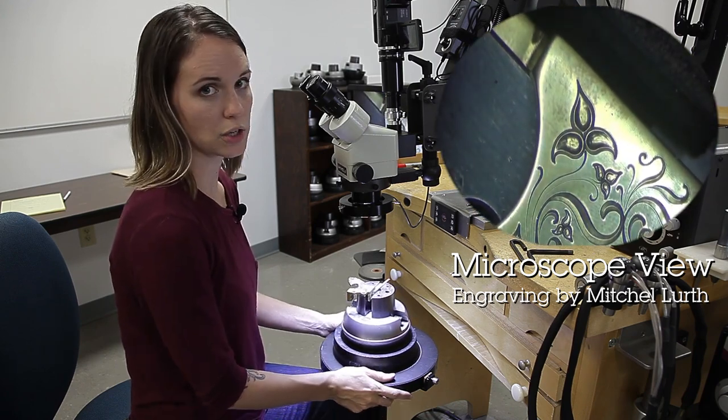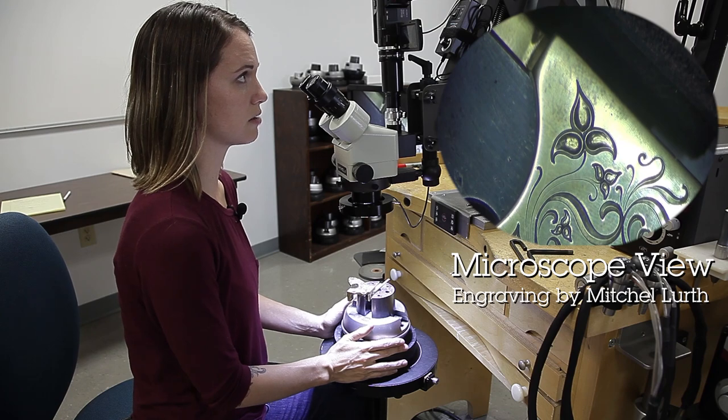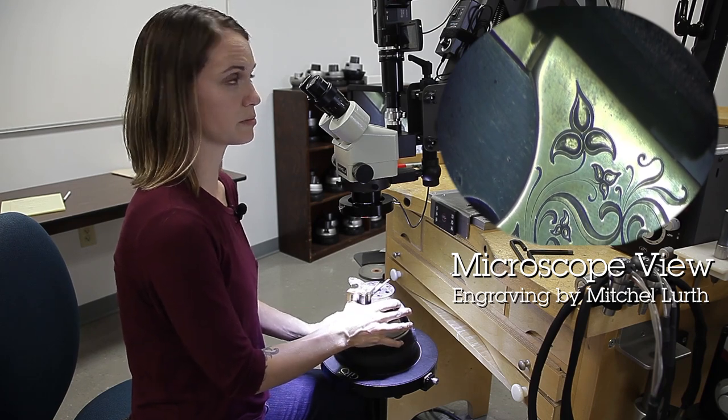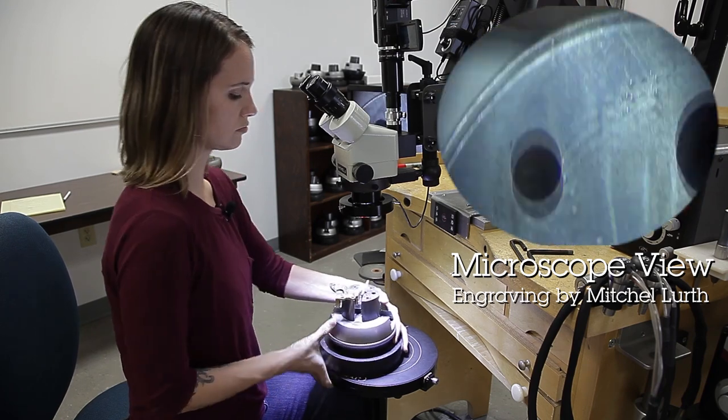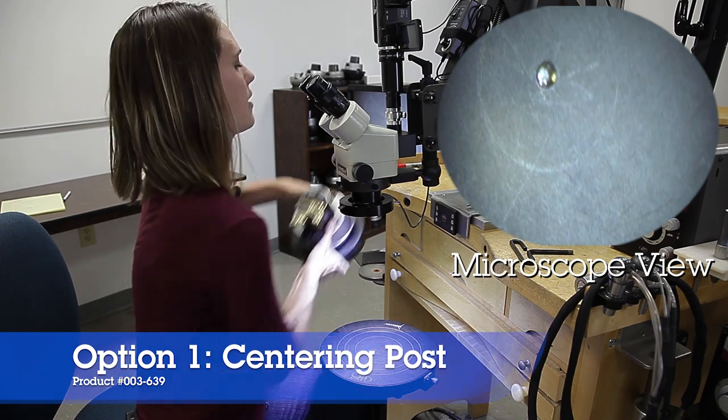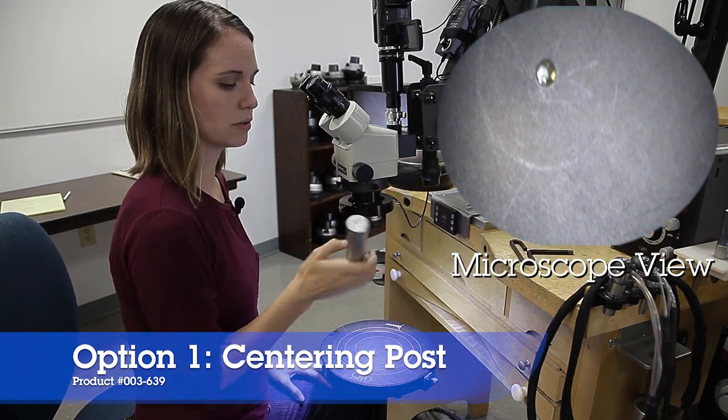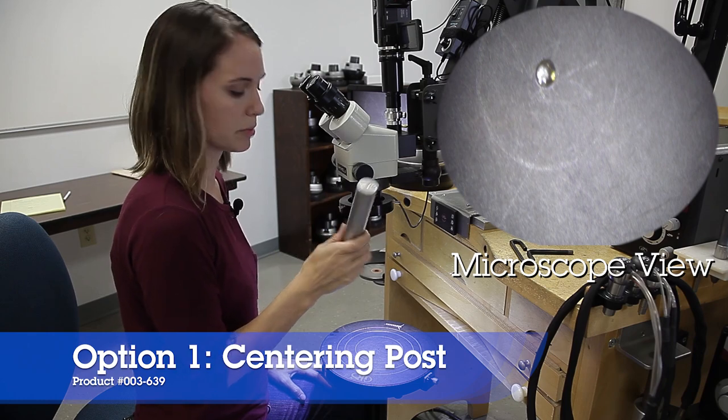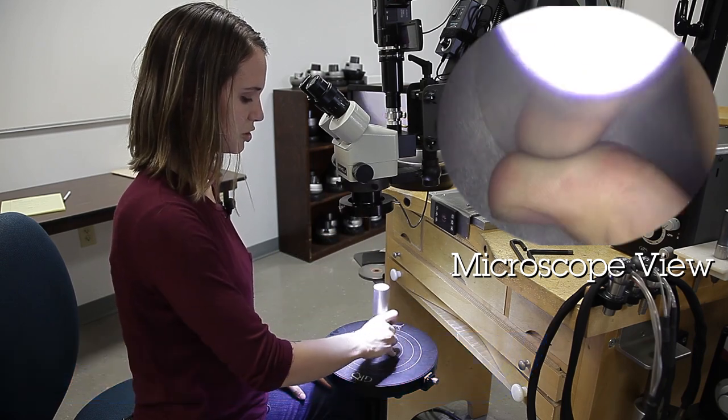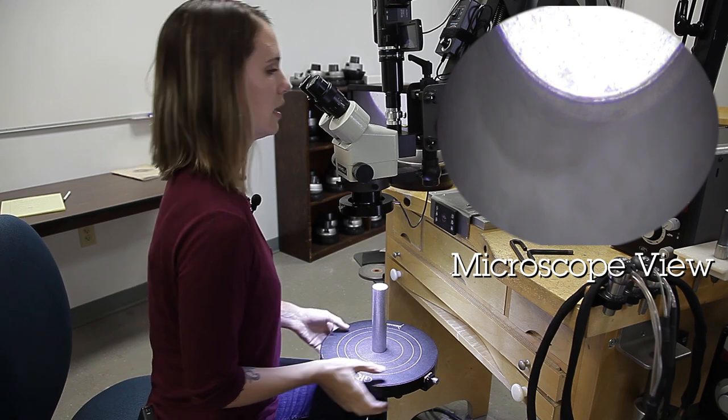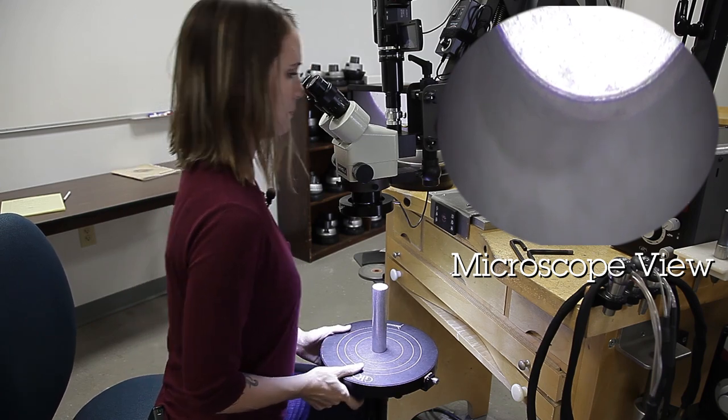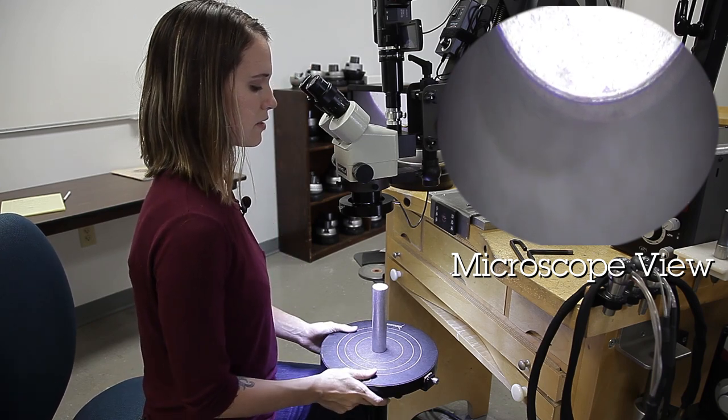So to start off, we're going to show you how to center your work on a turntable, and this will prevent you from chasing your work around in the future. So we're going to remove our vise. And then I'm going to show you using the centering post. It actually just drops onto our turntable.